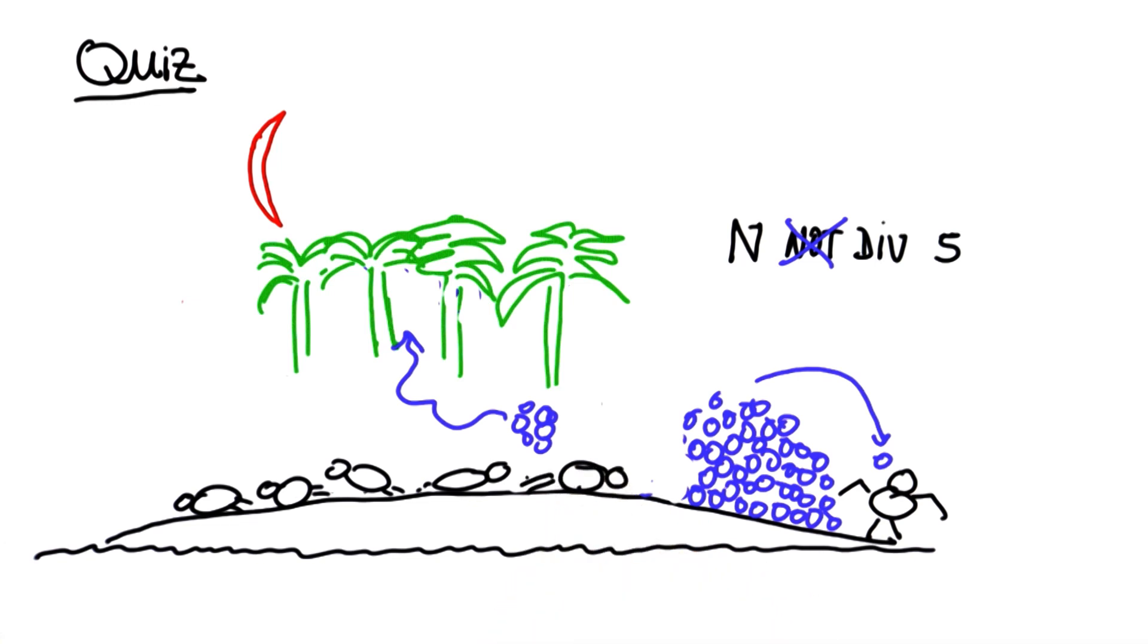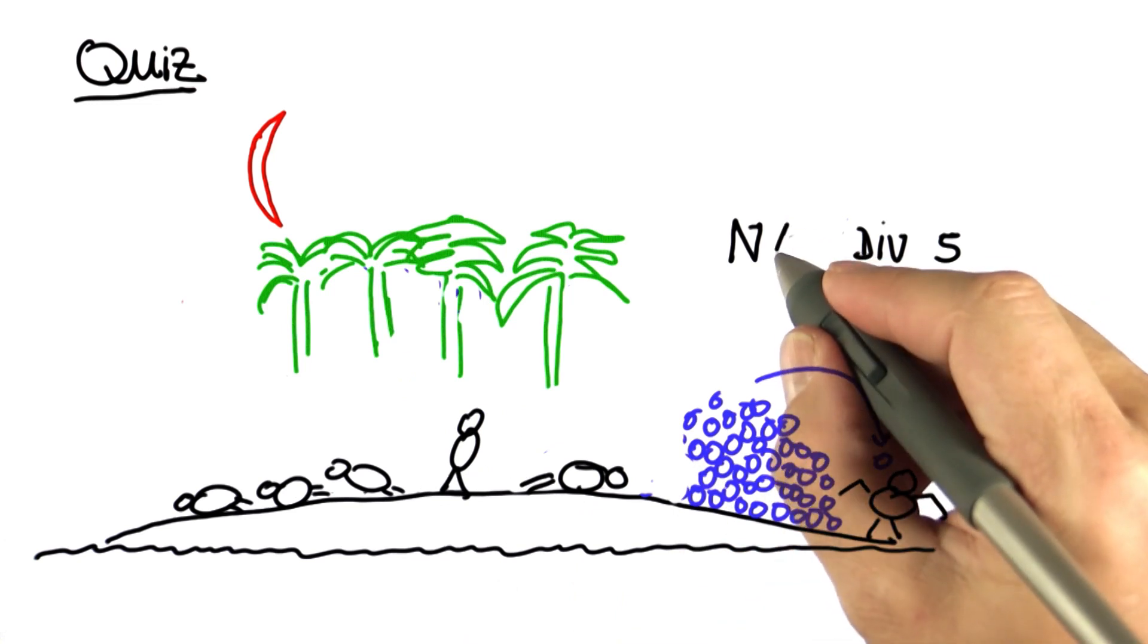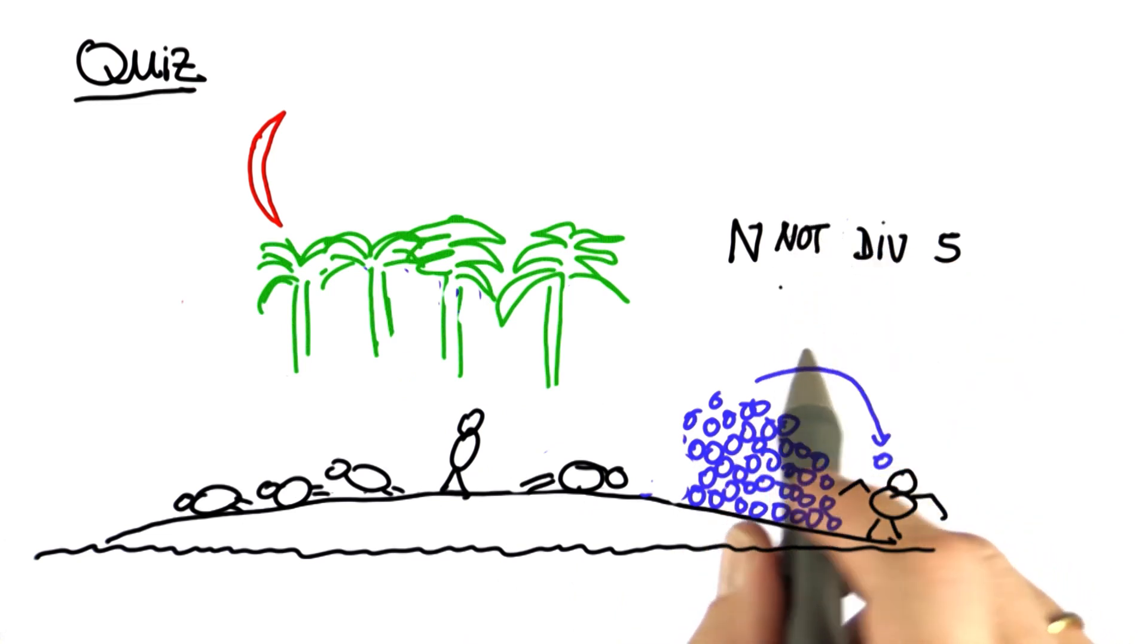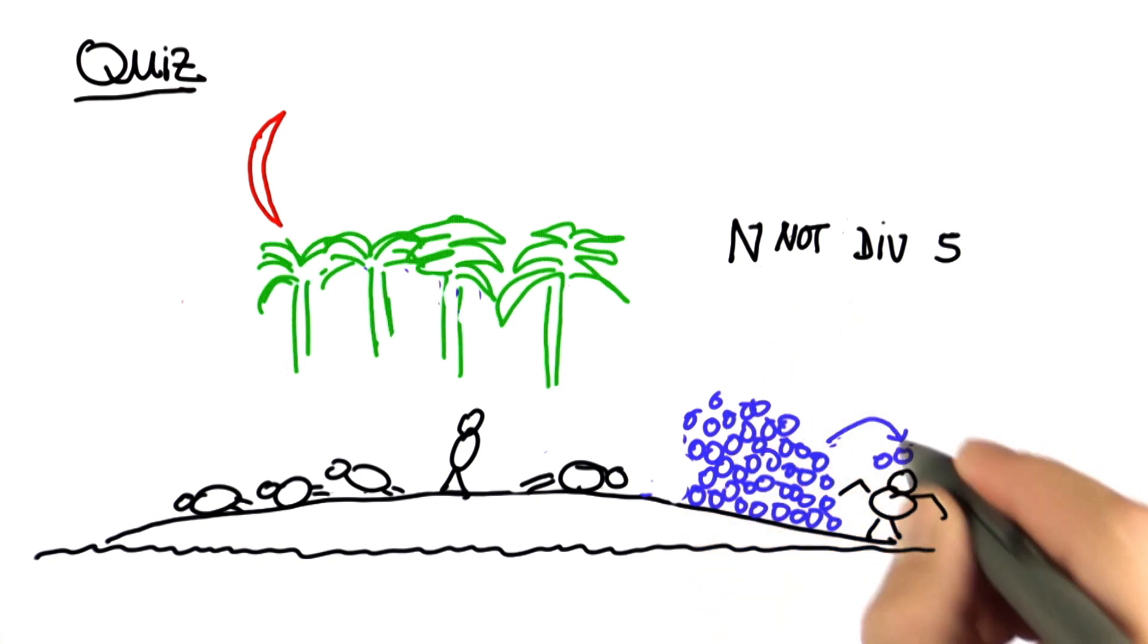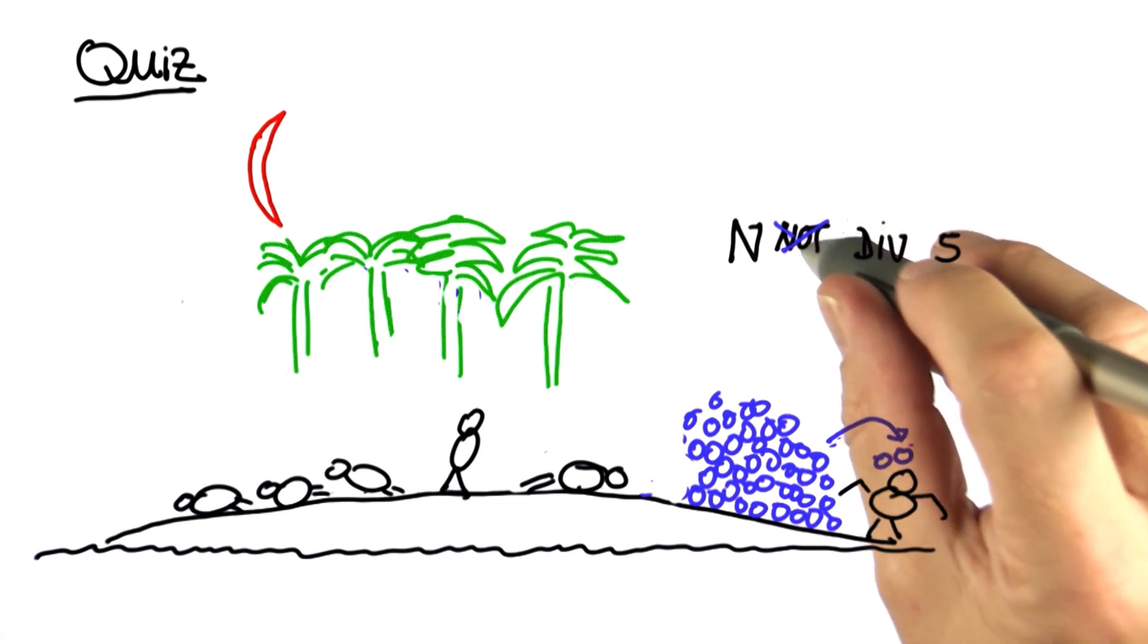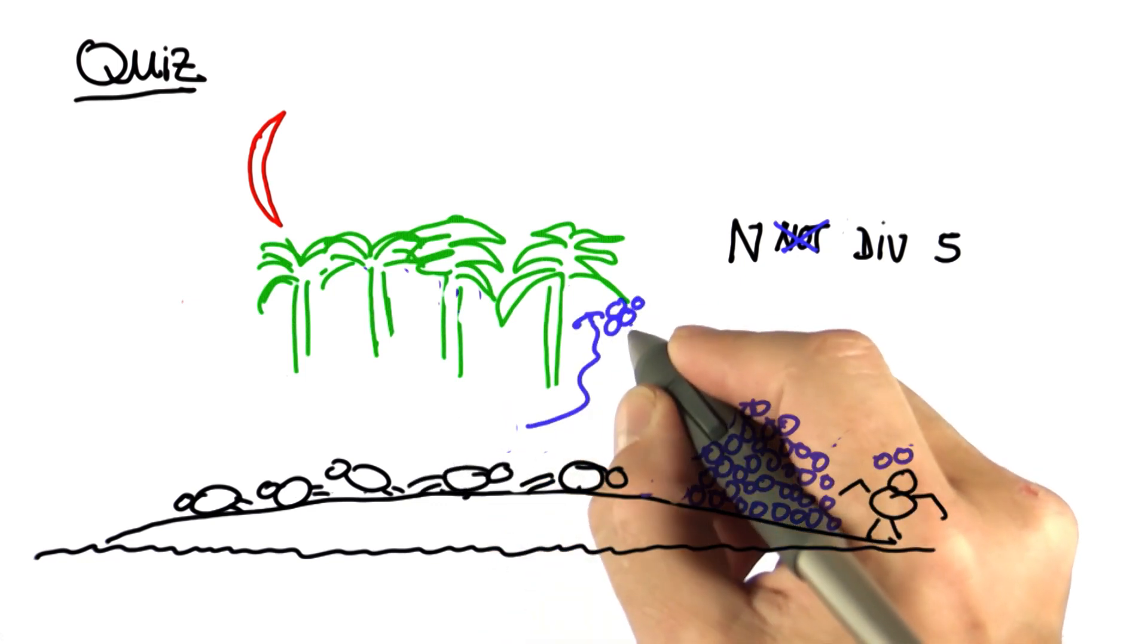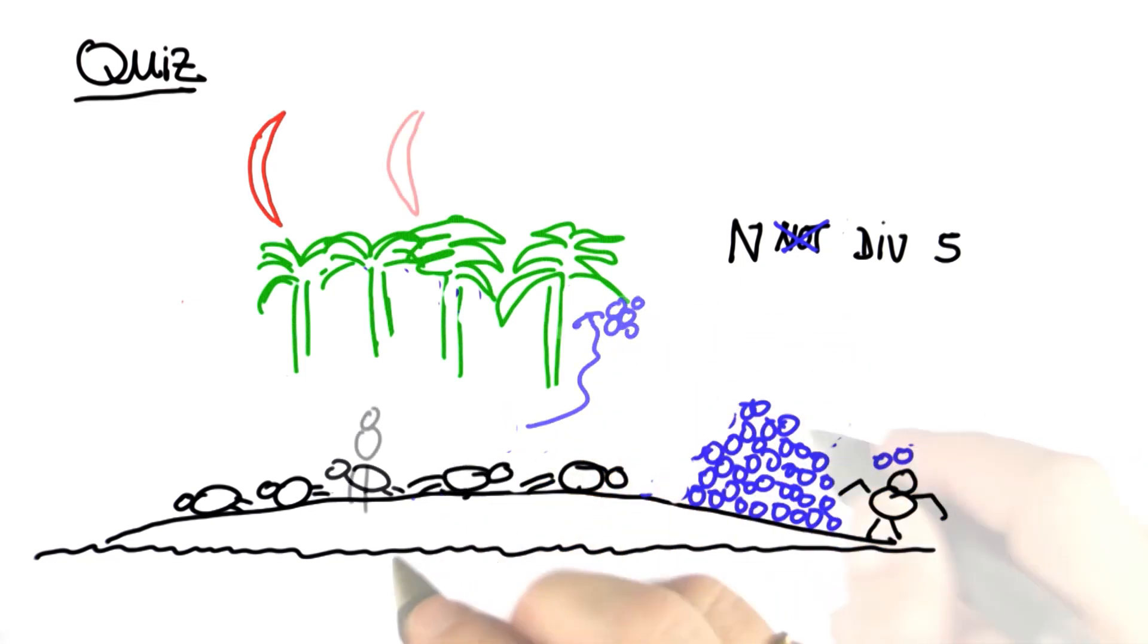The same scene now repeats four more times for each of the guys. The next guy wakes up, realizes that the remaining number is still not divisible by five. But if he gives a coconut to the monkey, who now holds two coconuts, then the remainder is divisible by five. So he takes his fifth and hides it in a safe place. And now the guy falls asleep again.